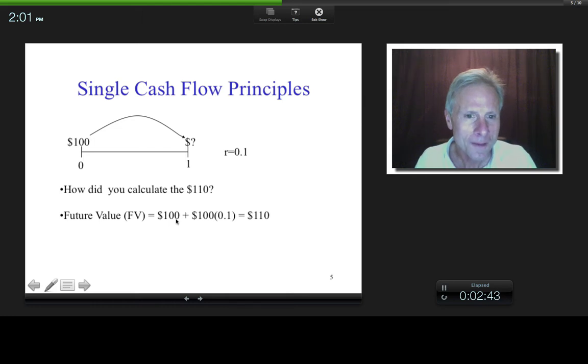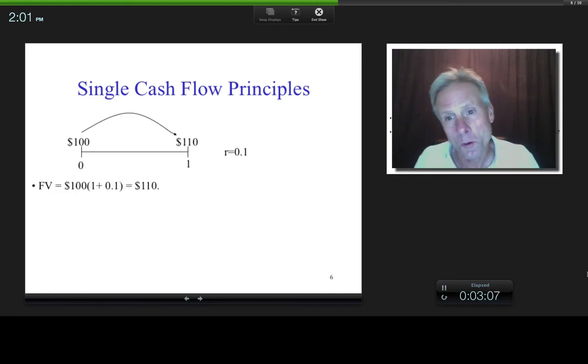Now, if I wanted to, could I factor out this $100? I could, right? And what does factoring mean? Basically, I could take the $100 right here and $100 times this 1 is what we have there. And $100 times this 0.1 is what we have right here. So in other words, the $100 times 1.1 came to the $110. And that's what we would call the future value.